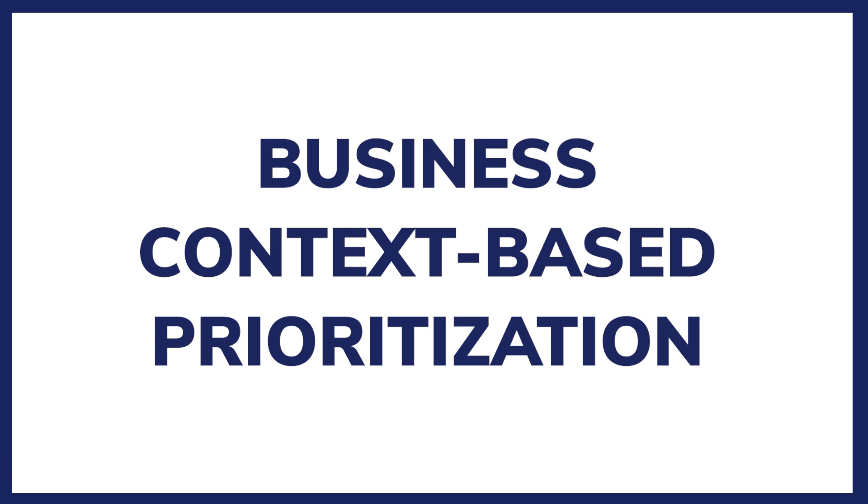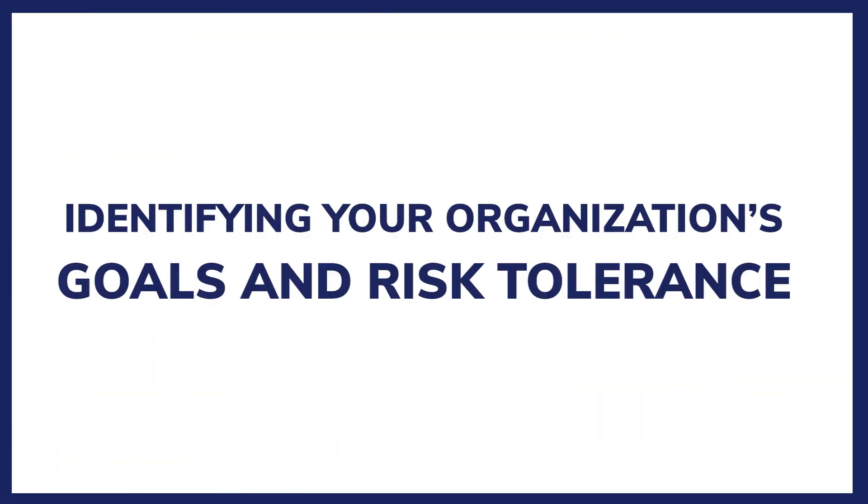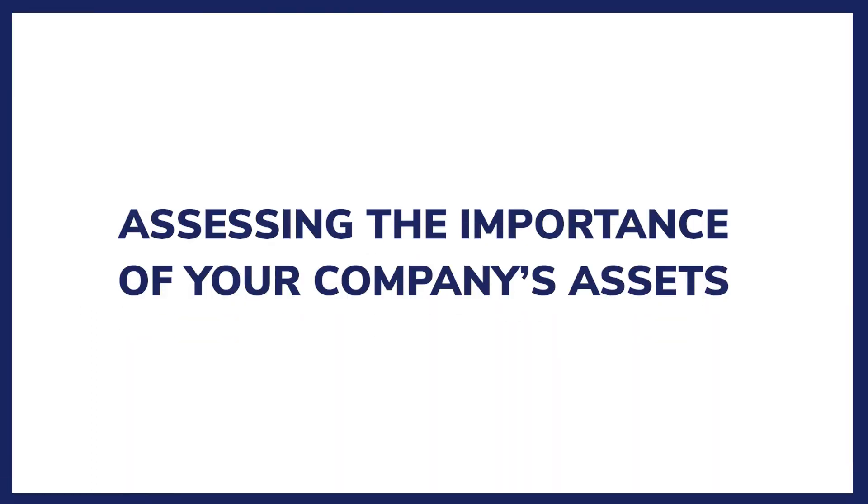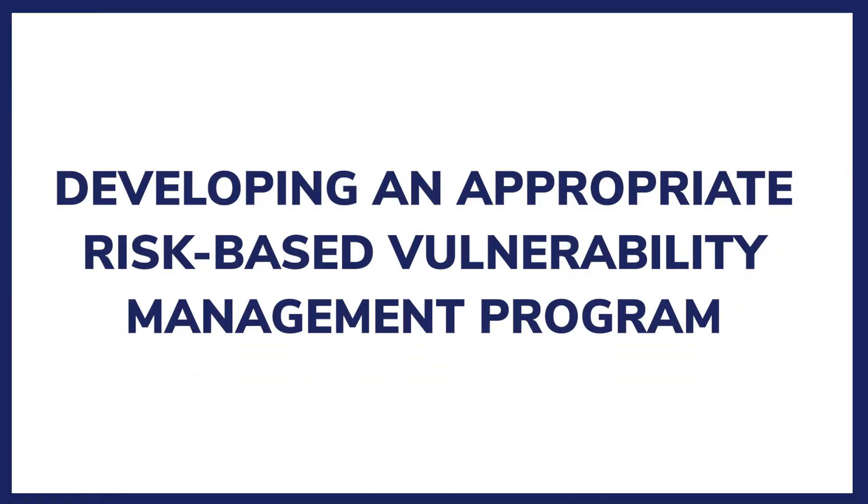The third method is business context-based prioritization. Every company has unique priorities, goals, and risk tolerance levels. Thus, probably the best prioritization method is the one that aligns with your business's needs and objectives. It is still advisable to use CVSS and the Known Exploited Vulnerabilities database, but you can be more efficient by filtering vulnerabilities considering your current environment. To make it easier, focus on identifying your organization's goals and risk tolerance, assessing the importance of your company's assets, incorporating contextual information, and developing an appropriate risk-based vulnerability management program.